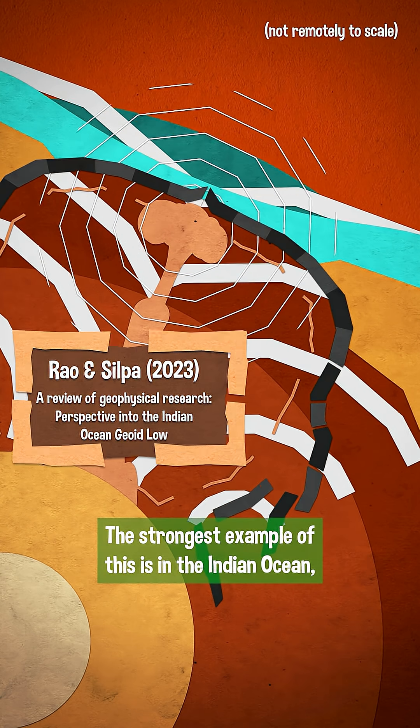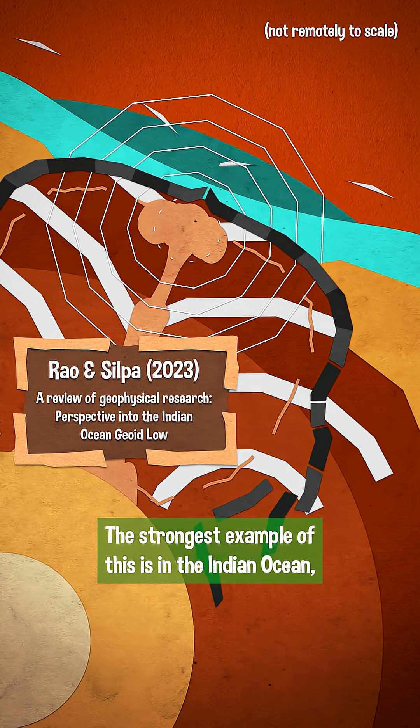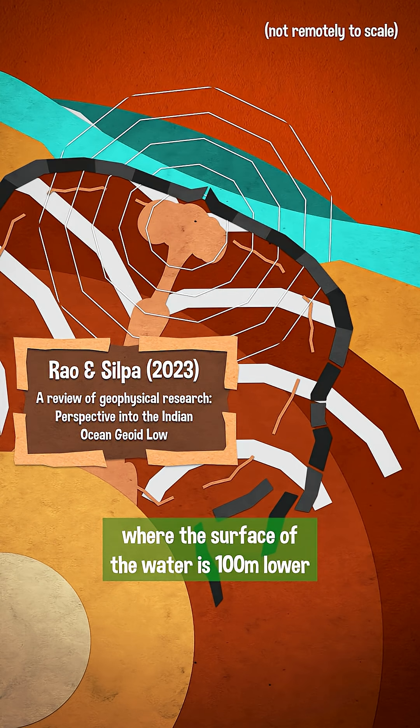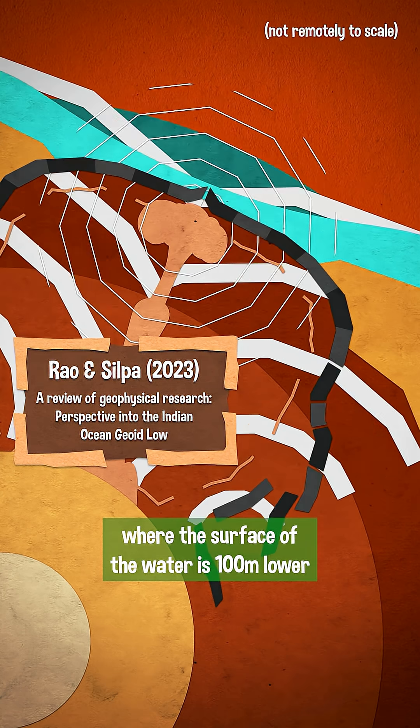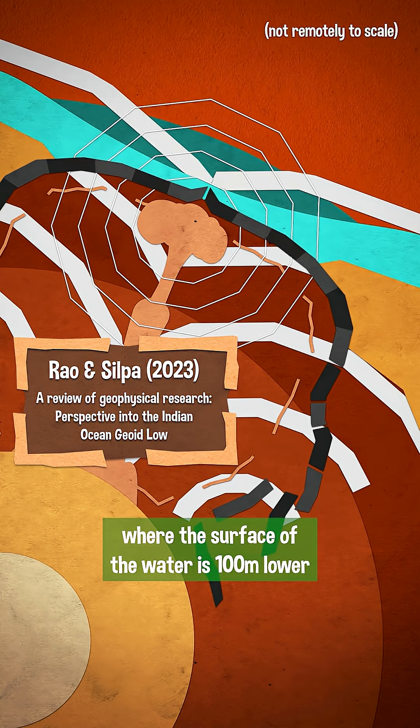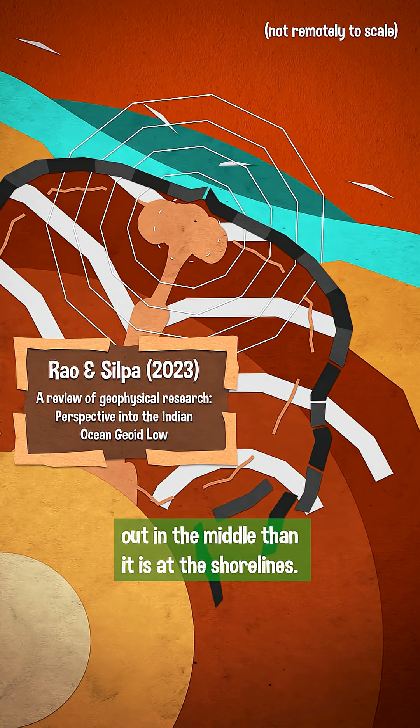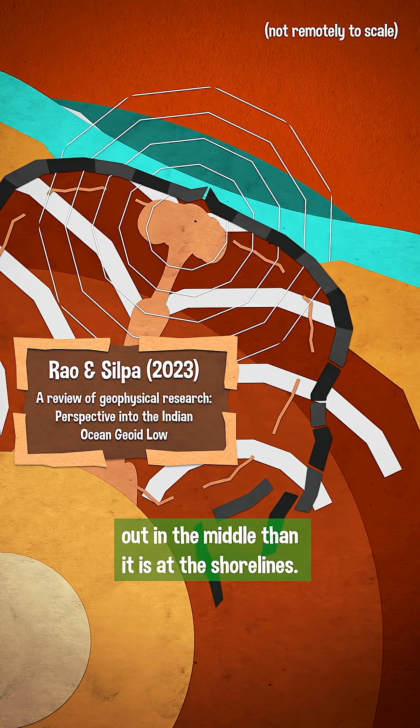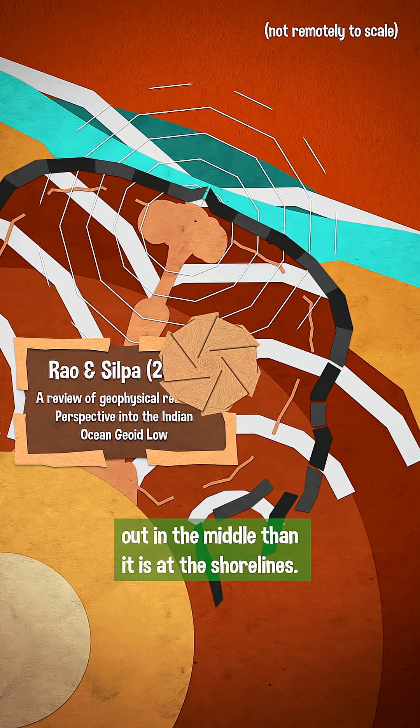The strongest example of this is in the Indian Ocean, where the surface of the water is a hundred meters lower out in the middle than it is at the shorelines.